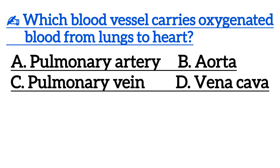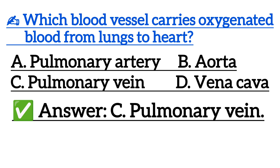Which blood vessel carries oxygenated blood from the lungs to the heart? Correct answer is option C: pulmonary vein.